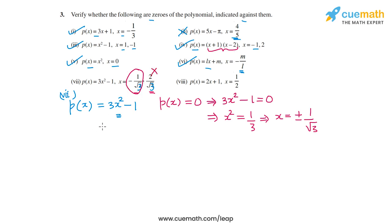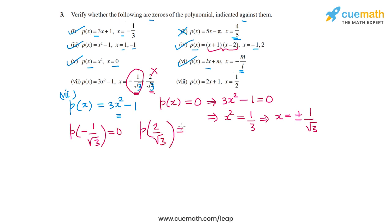Alternatively, you could substitute both -1/√3 and 2/√3 into p(x): p(-1/√3) = 0, but p(2/√3) ≠ 0, which you can verify directly. So in part 7, both given values are not zeros of the polynomial — only -1/√3 is.